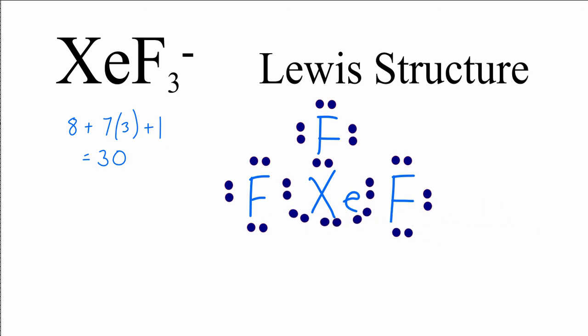So now we've used all 30 valence electrons. The fluorines have complete octets, and the xenon has more than 8 valence electrons, but that's okay because it can have an extended octet, so this is the Lewis structure for XeF3- and this is Dr. B.